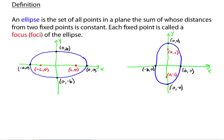We're going to talk about ellipses that are horizontal and ellipses that are vertical. The first thing to note about ellipses is that we're going to have a center. In both these cases here, the center is the origin, though it will not always be the origin.